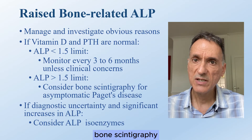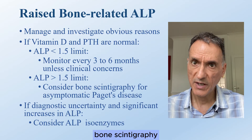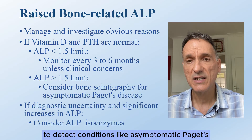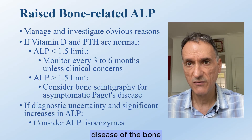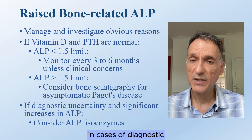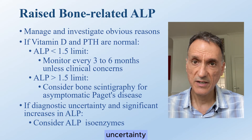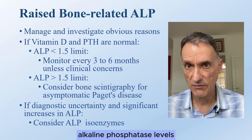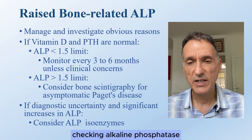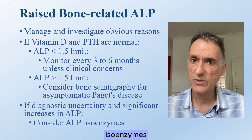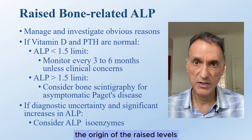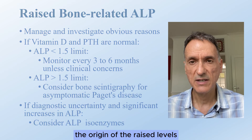For non-hepatic alkaline phosphatase more than 1.5 times the upper limit of normal, bone scintigraphy may be considered to detect conditions like asymptomatic Paget's disease. In cases of diagnostic uncertainty and significant increases in serum alkaline phosphatase levels, checking alkaline phosphatase isoenzymes will be considered, as this is more precise in determining the origin of the raised levels.